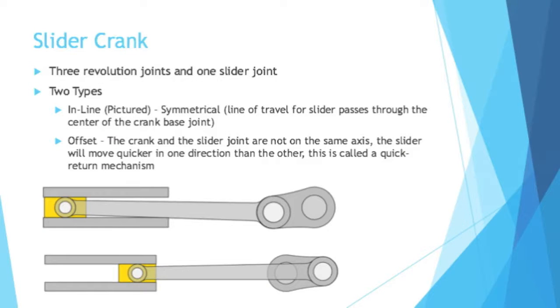One type of four bar linkage that I find super fascinating is the slider crank, which is three revolution joints and one slider joint. A slider joint slides, moves back and forth. There's two types. There's inline, which is the one pictured below. It is symmetrical. The line of travel for the slider passes through the center of the crank base joint. Then you have offset. This will be when the crank and slider joint are not on the same axis. This causes the slider to move quicker in one direction than the other. This is called a quick return mechanism.